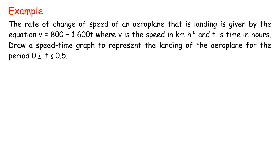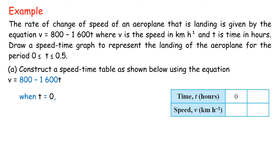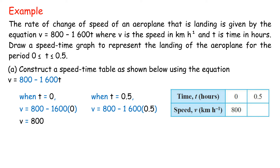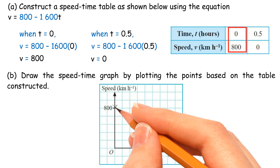Example: The rate of change of speed of an aeroplane that is landing is given by the equation V equals 800 minus 1600T, where V is the speed in km per hour and T is time in hours. Draw a speed-time graph to represent the landing of the aeroplane for the period 0 ≤ T ≤ 0.5. A. Construct a speed-time table using the equation: when T equals 0, V equals 800; when T equals 0.5, V equals 0. B. Draw the speed-time graph by plotting the points based on the table.